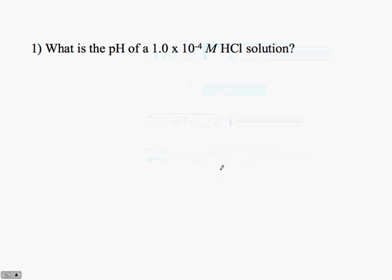What is the pH of a 1.0 times 10 to the minus 4 molar HCl solution? So we're asked to determine pH. We're told that our hydrogen ion concentration is equal to 1.0 times 10 to the negative 4.